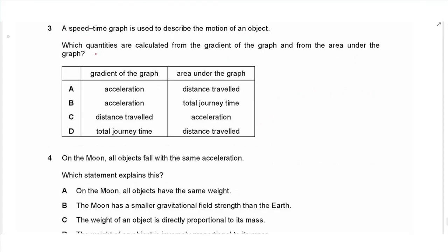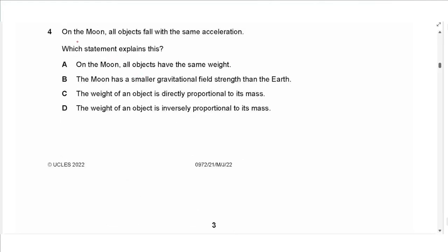Question 3: a speed-time graph is used to describe the motion of an object. Which quantities are calculated from the gradient and from the area under the graph? The gradient of a speed-time graph equals acceleration, and the area under the graph equals the distance traveled, so the answer is A.